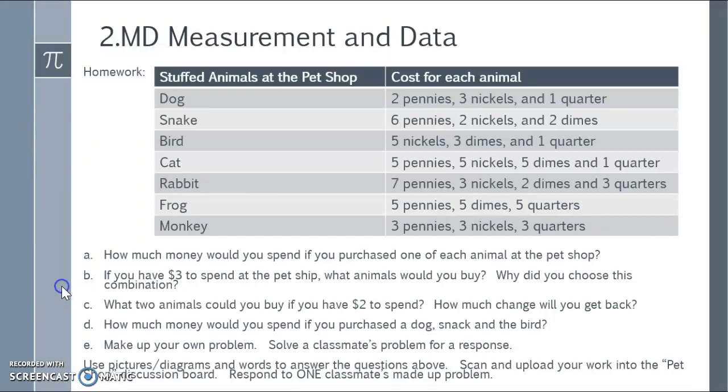To continue with practicing money for an assignment, you'll see that I have a table here that has a bunch of stuffed animals at the pet shop and then how much it costs for each animal. Be careful because the order is all scrambled up. Just like when we order base ten pieces, I scrambled up the order of the money because not all money when you take it out of your pocket or dump it out of your piggy bank automatically goes in the correct order. Looking at the table, answer the following questions. I want you to pay particular attention to letter E. I want you to make up your own problem.